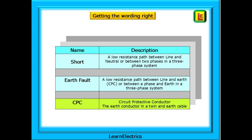We should begin by getting the wording right, especially if you are studying electrics and about to sit an assessment. A short is a low resistance path between line and neutral, or between two phases in a three-phase system. Then we have an earth fault — a low resistance path between line and earth or CPC, or between phase and earth in a three-phase system. It's a short, yes, but it does have its own name. A reminder that the CPC, or circuit protective conductor, is the earth conductor in a twin and earth cable.